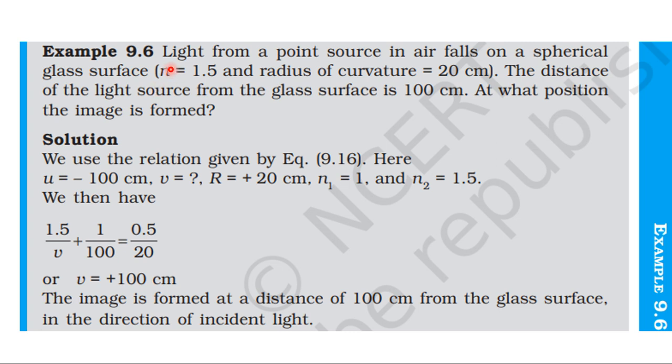From NCERT textbook, from the topic Ray Optics and Optical Instruments, Example 9.6: Light from a point source in air falls on a spherical glass surface with refractive index equal to 1.5 and radius of curvature 20 centimeters. The distance of the light source from the glass surface is 100 centimeters. At what position is the image formed?